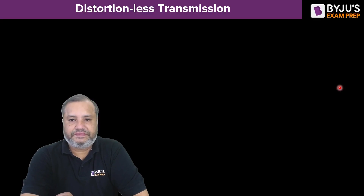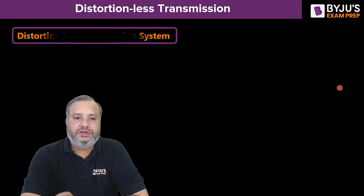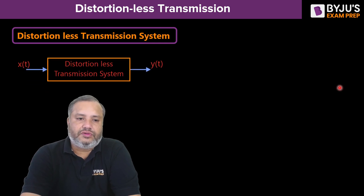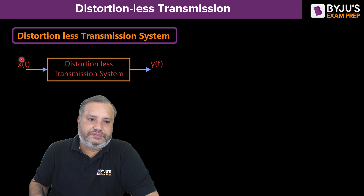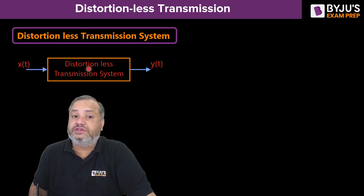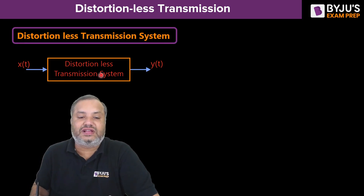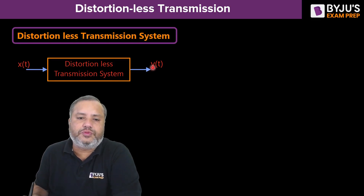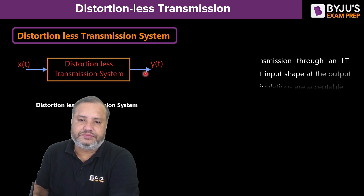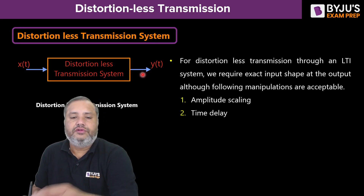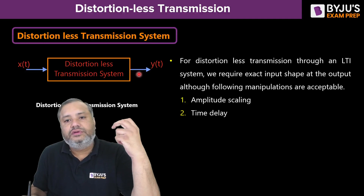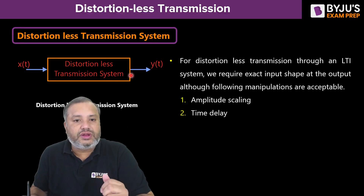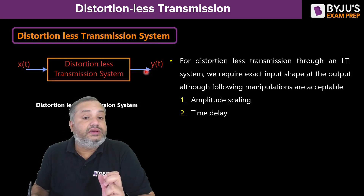Distortionless transmission. Let me first explain what this distortionless transmission system is. There is a signal x(t) which is fed to this system, named as the distortionless transmission system, and the corresponding output is y(t). What we expect is that the originality of the signal should remain at the end of the process also.